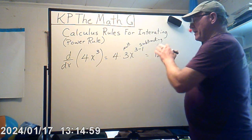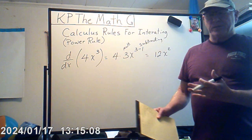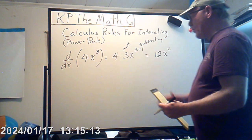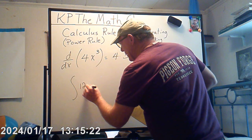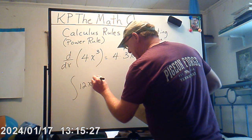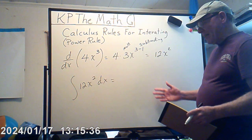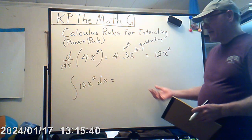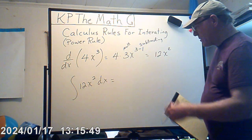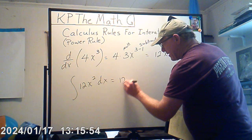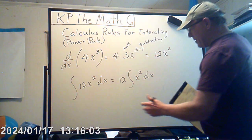Now if we go backwards, the anti-derivative means exactly that — the anti of the derivative. We do just the opposite. So if we take the anti-derivative of 12x squared dx — the indefinite integral of this — we can put 12 on the outside and have x squared dx.